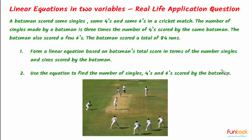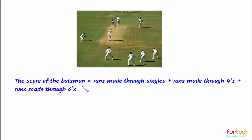Let's see the approach for doing this problem. The score of the batsman will be equal to runs made through singles plus runs made through fours plus runs made through sixes. We can start solving our problem with three variables, but as asked in the question, finally we should have only two variables in the equation.